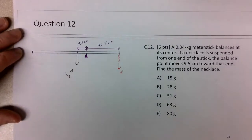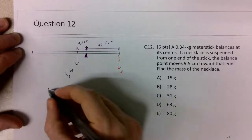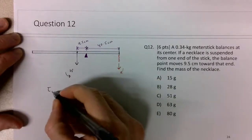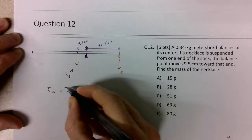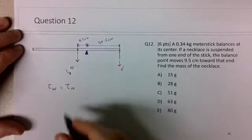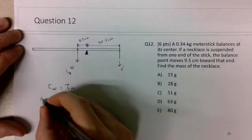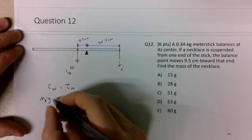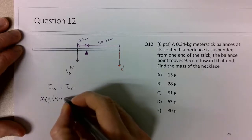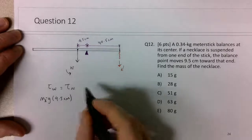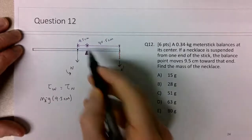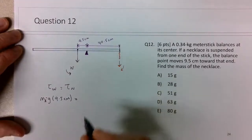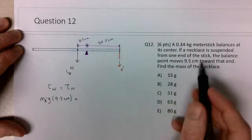So what I would write here is that the torque about this pivot point of the weight force is equal to the torque of the necklace. And the torque of the weight force is its magnitude of the weight of the mass of the ruler times g times 9.5 centimeters. That's the distance between the center of the ruler and the pivot point, or the balance point.